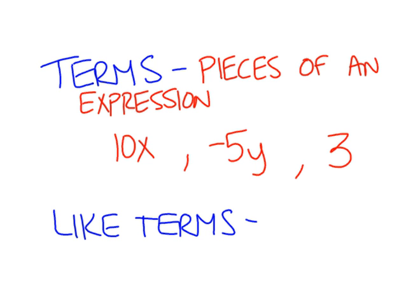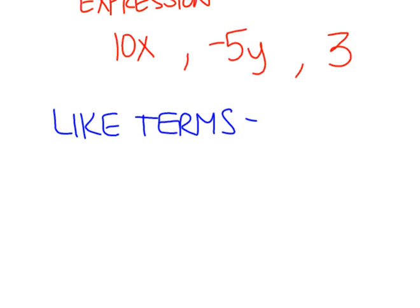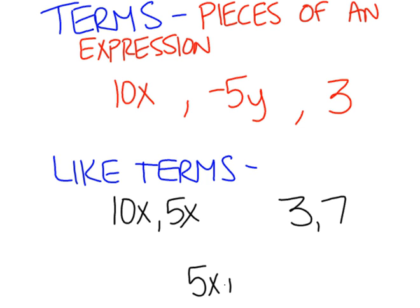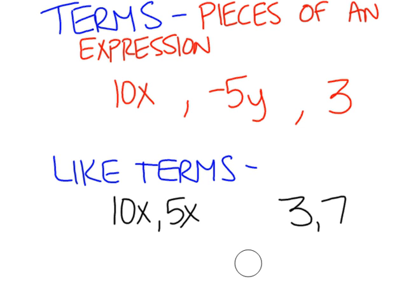Like terms are when you are able to combine those things together. An example of like terms might be 10x and 5x — those would be like terms because they are something we could add up together. Another example of like terms might just be 3 and 7; we could add 3 plus 7. Unlike terms are when you have something with a variable and something without a variable. So 5x plus 3 would not count as like terms, because those are not the same.